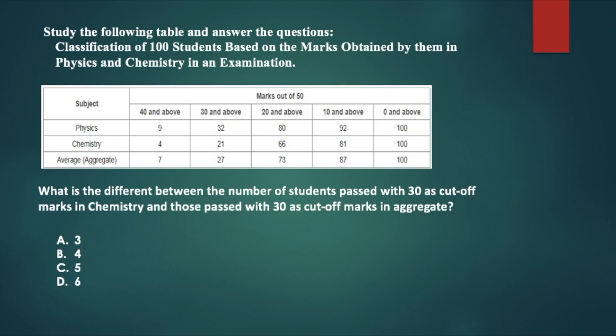So the first question for today is classification of 100 students based on the marks obtained by them in physics and chemistry in an examination. 100 students have total marks from 0 to 50 with breakup. So it is important that you understand this. How many students have marks from 0 to 50? 100 people, because you either get 0 or 50 or anything between it. So this is always 100.